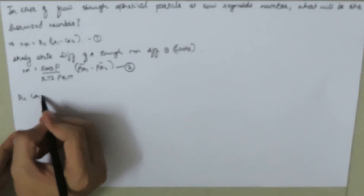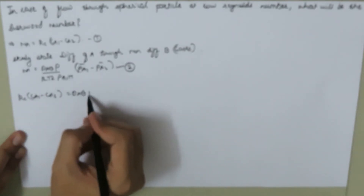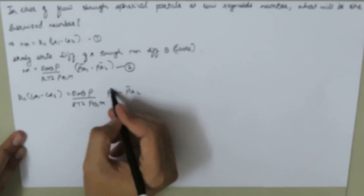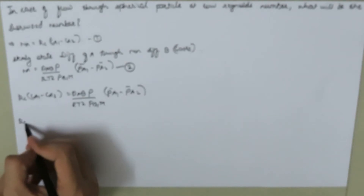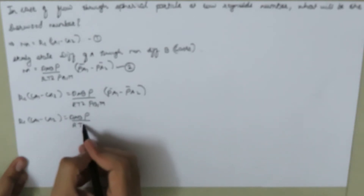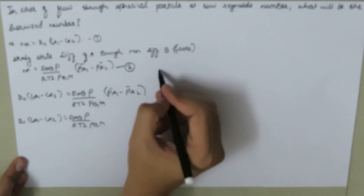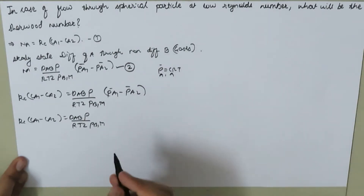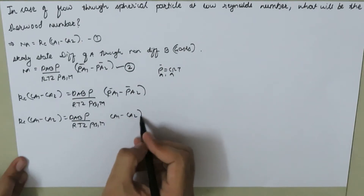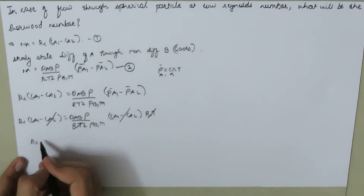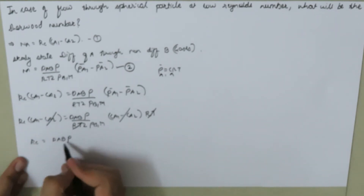Now we can equate both equations. We know Kc times (CA1 minus CA2) equals DAB·P divided by RTZ·PBM times (PA1 minus PA2). We can rewrite this as Kc times (CA1 minus CA2) equals DAB times CA1·RT over PBM. Since P equals CRT, PA1 bar can be written as CA1 times RT, giving (CA1 minus CA2). Taking RT as common, the RT terms cancel, and we are left with Kc equal to DAB·P over Z·PBM.